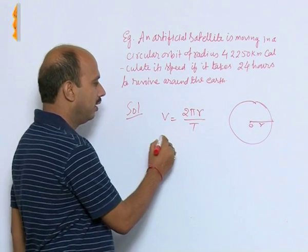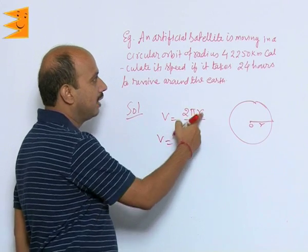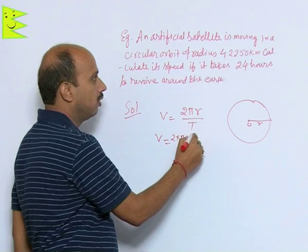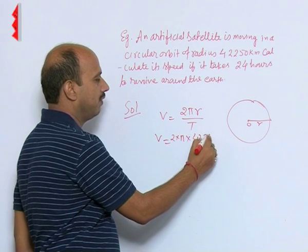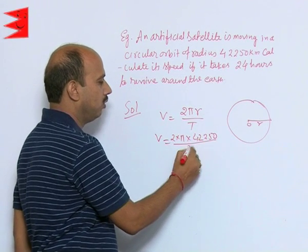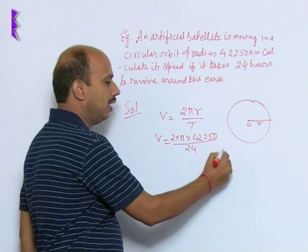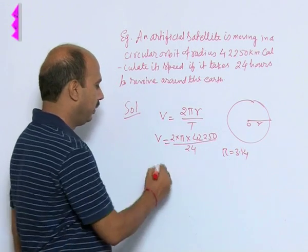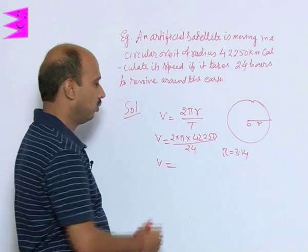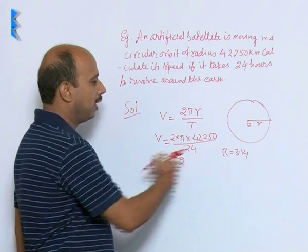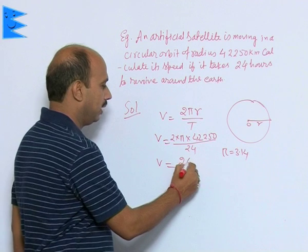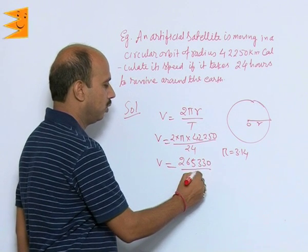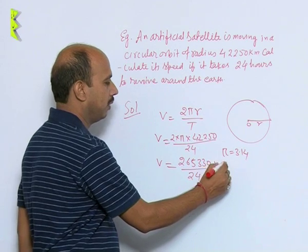So here we can write V = 2 × π × 42,250 divided by 24. We can put the value of pi, which is 3.14. So V = 265,330 divided by 24 kilometers per hour.